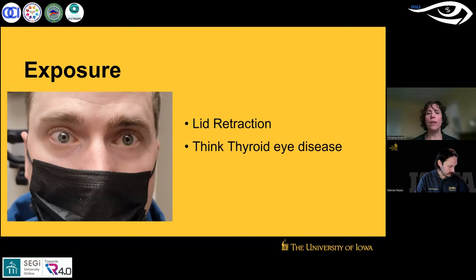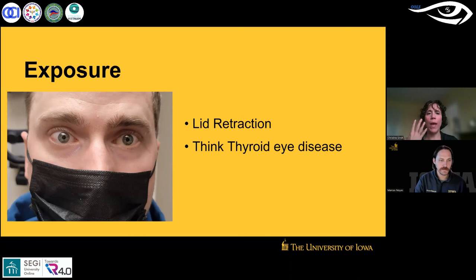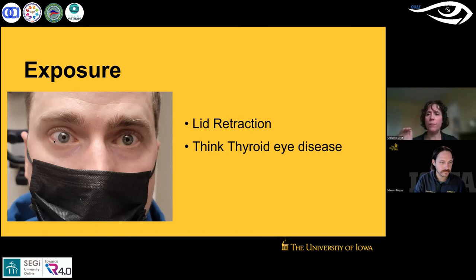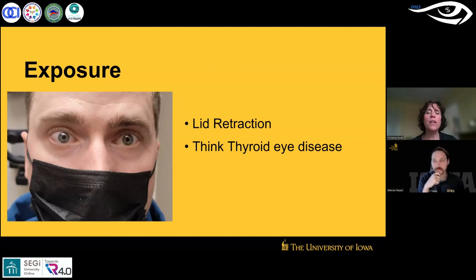Also look for subtle lid retraction. This young patient had been to several doctors before presenting — when they tried a scleral lens on him, his temporal eye got very red. Looking at the upper eyelid, you can see subtle temporal lid retraction and exposure in that area. It's your job to notice the placement of the eyelids — don't skip right over them. This young man had undiagnosed thyroid eye disease. In a young man, you might not immediately think thyroid, but always check.